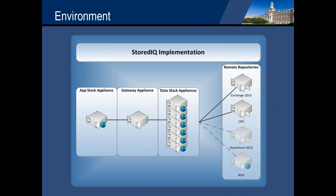Not sure how familiar you are with StoredIQ, but it is a three-tiered appliance. There is only one app stack, which is where you're presented with your results and where you run your filters from. There's a single gateway, and then there are as many data stacks as you'd like to implement in your environment. We actually ended up implementing six data stack servers to connect out to the Exchange public folders, as well as some CIFS connections. The primary focus so far has been the Exchange connection for the Outlook public folders.